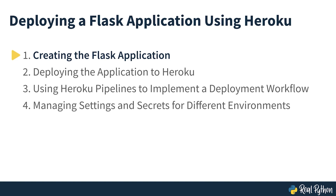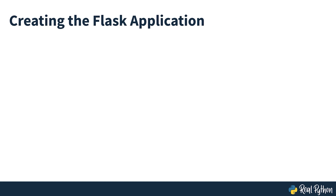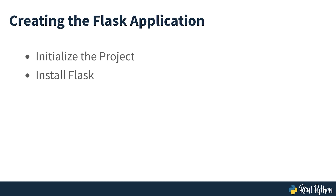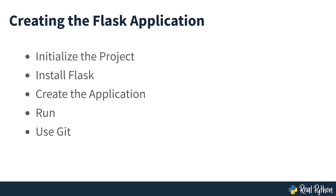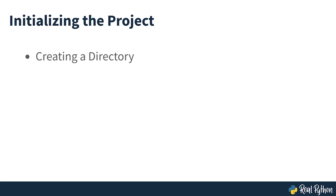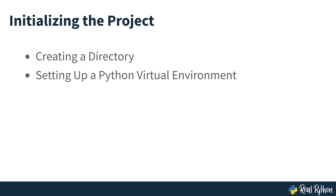Creating the Flask application. In this section, you'll learn how to create a Python Flask example application and run it locally. You're going to initialise the project, install Flask, create the application and run it on your computer. You'll also learn how to use Git to version your application's code. The project initialisation consists of creating a directory for your application, setting up a Python virtual environment where dependencies will be installed, and initialising the Git repository.